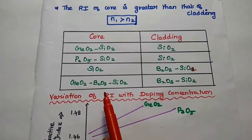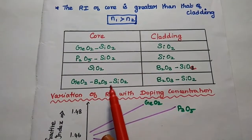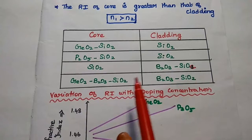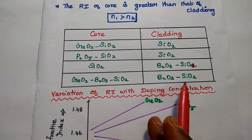Similarly, this is another example for the combination of germanium dioxide, boron trioxide, silicon dioxide. Here cladding for this combination is boron trioxide and silicon dioxide.